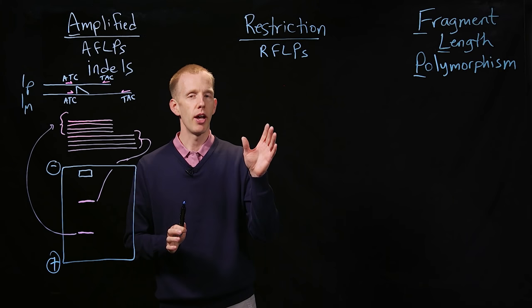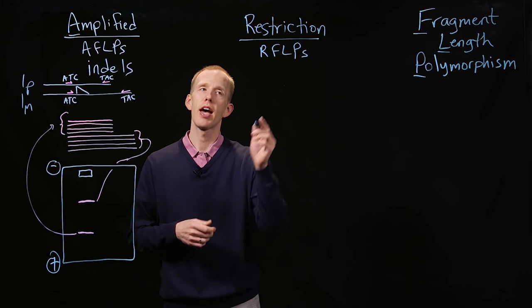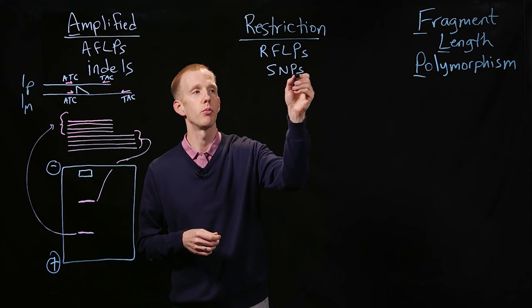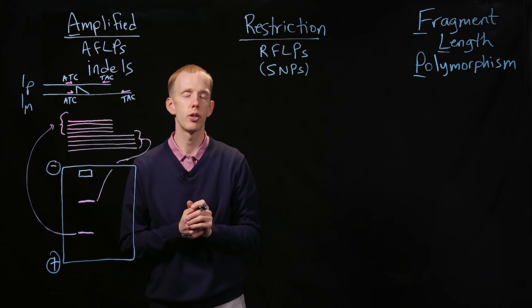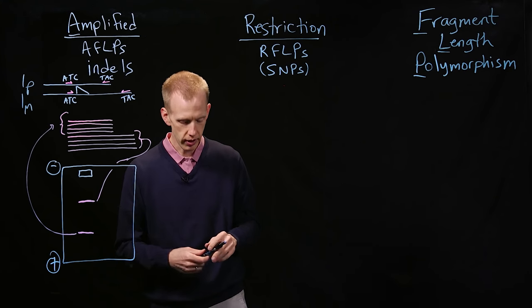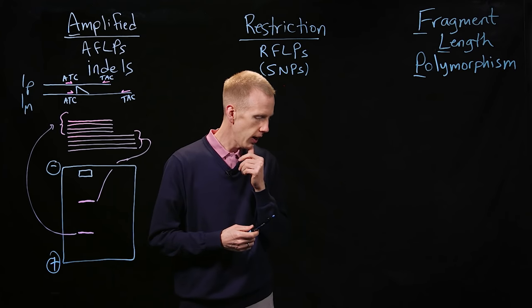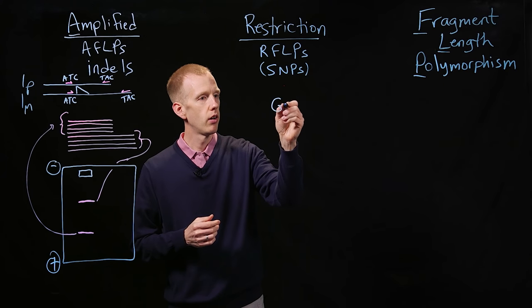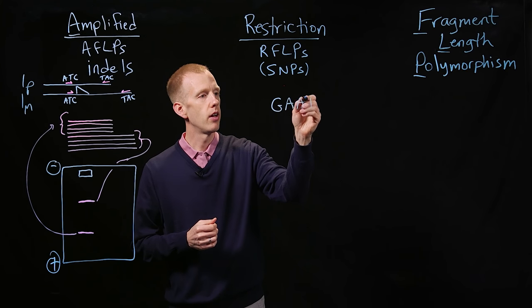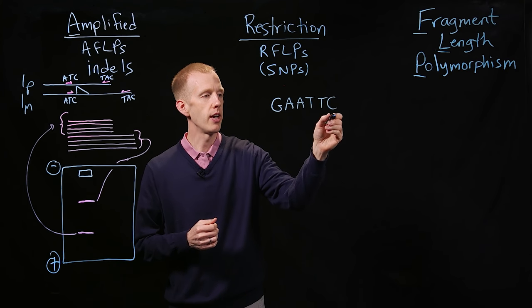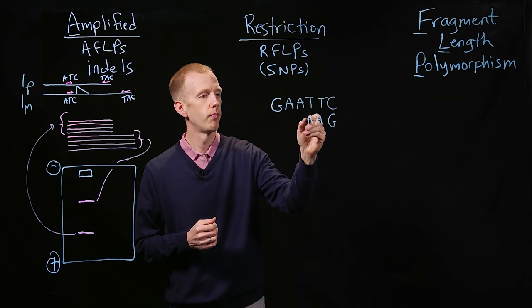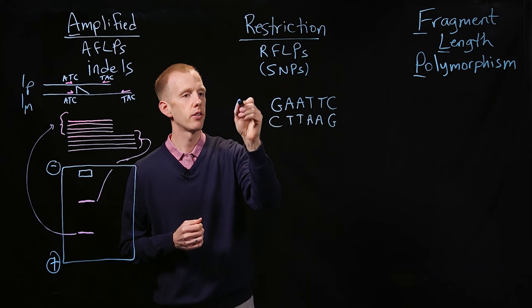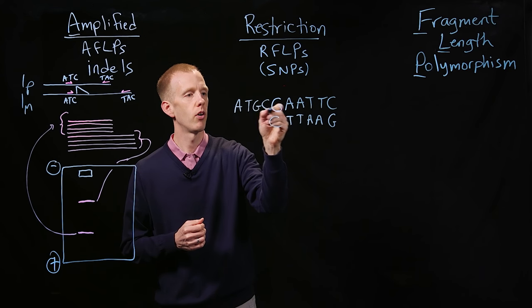At the same time, we have restriction fragment length polymorphisms, and these have to do with single nucleotide polymorphisms, usually, the type of mutation that we've discussed previously. And here's how this works. So we might have a DNA sample that has an ECO-R1 restriction site in it, and some other nucleotides on either side.